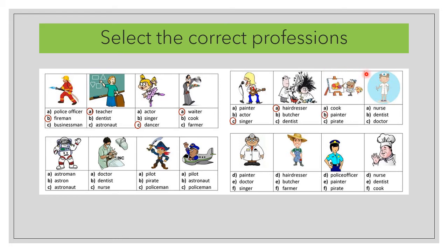What's his job? He is an astronaut. What's his job? He is a dentist. What's his job? He is a pirate. What's his job? He is a pilot. What's his job? He is a doctor. What's his job? He is a farmer. What's her job?